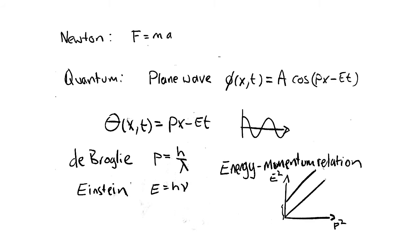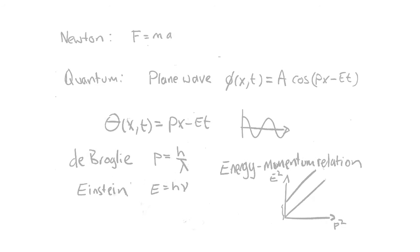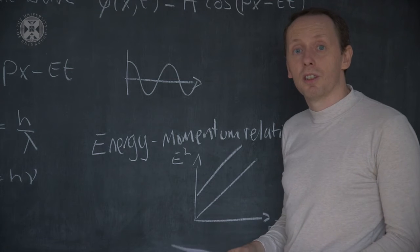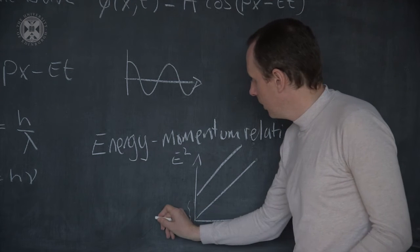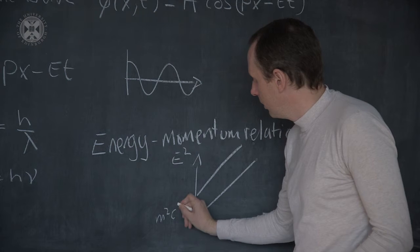The speed is given by the slope of E with p. For massless particles, this is 1. Massive particles have the familiar p equals mv in the non-relativistic limit. For massive particles, this separation is m squared c to the fourth.